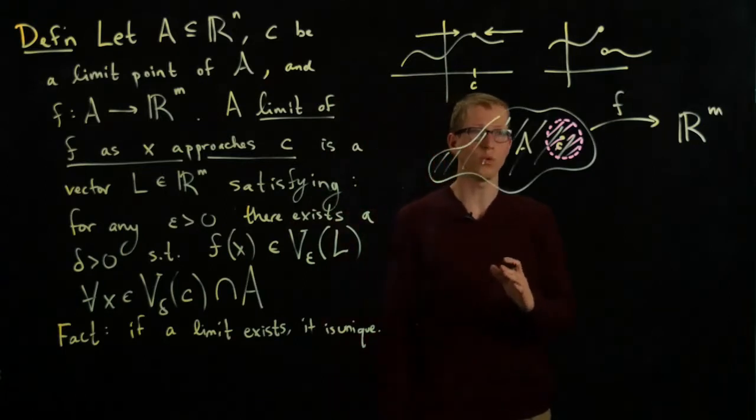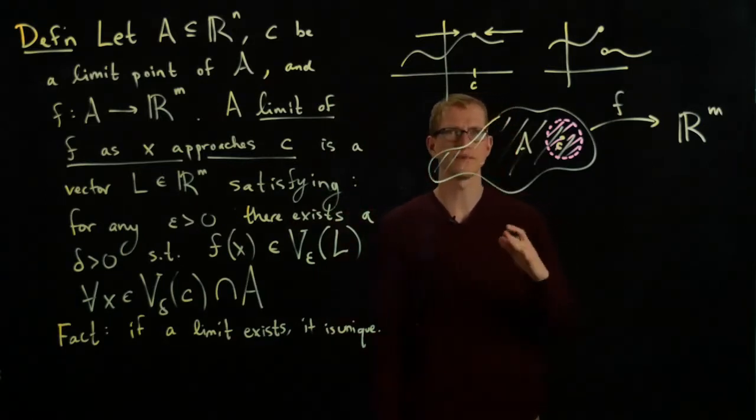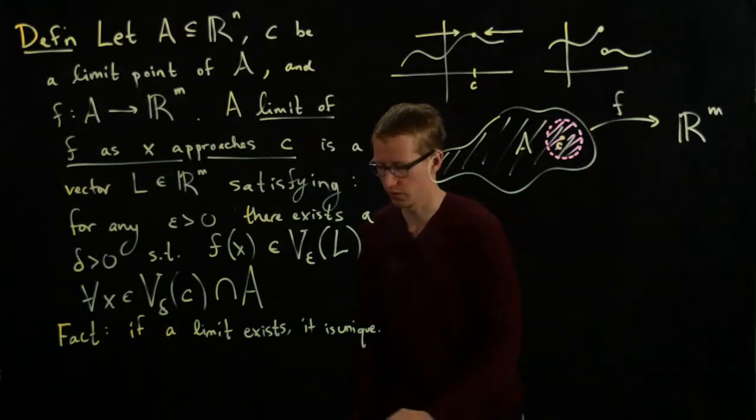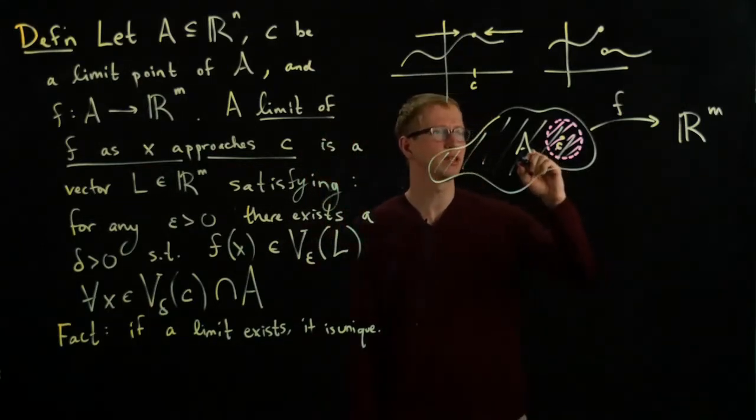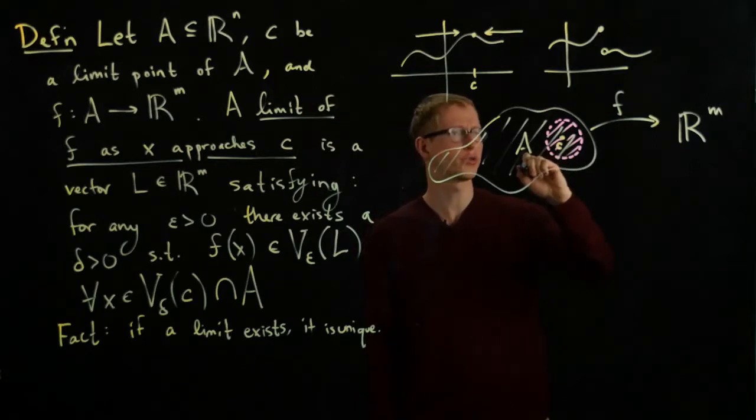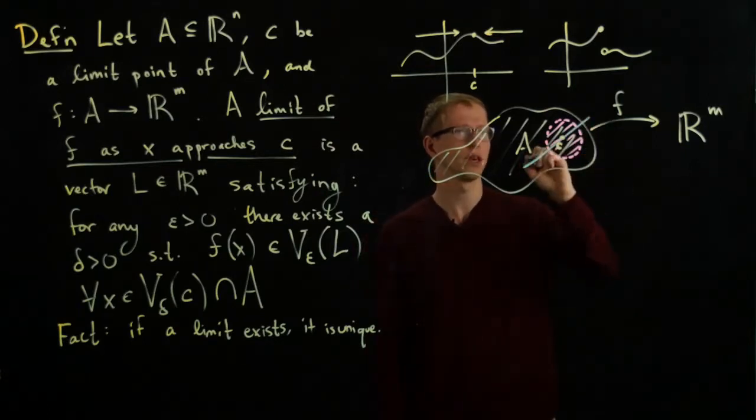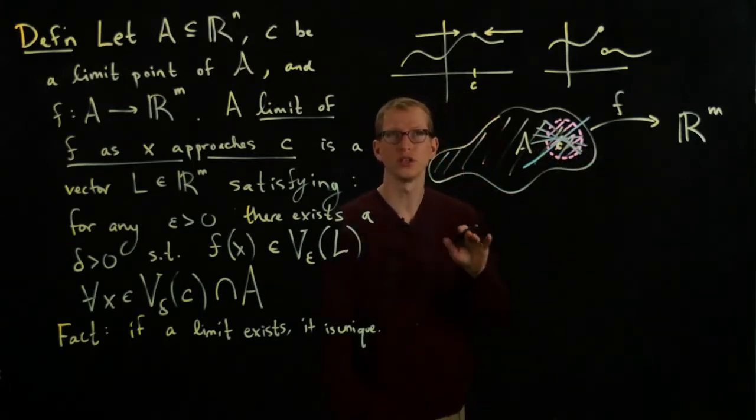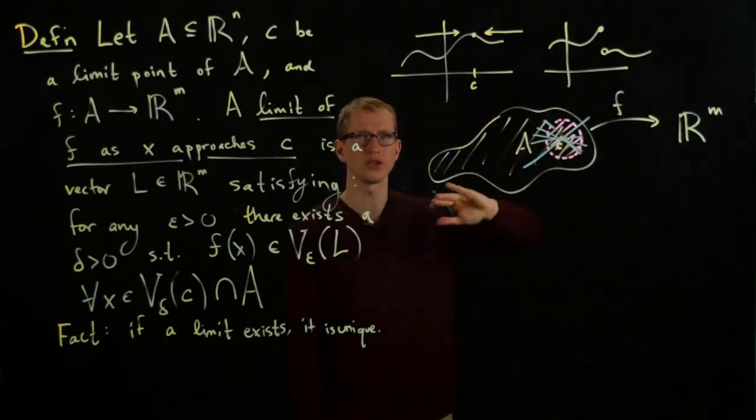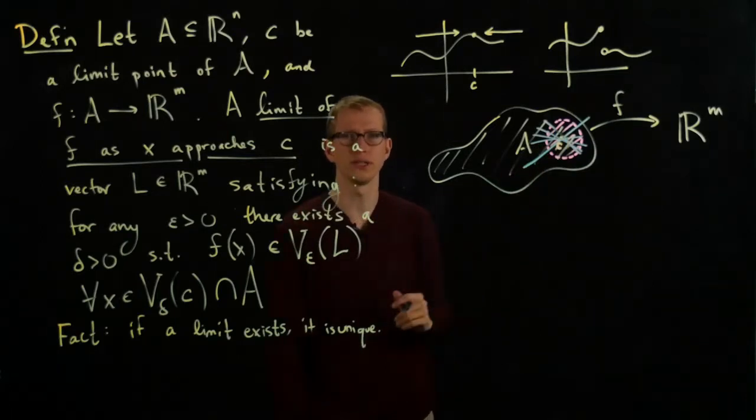So if we want to make sense of limits from the left and limits from the right, you can see that there's a bit of an issue. What should I call left? What should I call right? Perhaps maybe we can look at straight lines that go through C. Every straight line, you know, it makes sense to restrict my function to any of these straight lines that go through C and also intersect A.